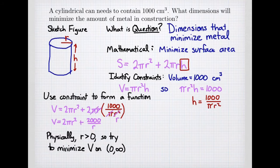We now simplify that. The π and one of the r's cancels. So 2 times 1,000 gives me 2,000 divided by r. So this is the formula of the function that we want to minimize.